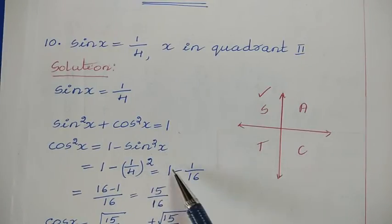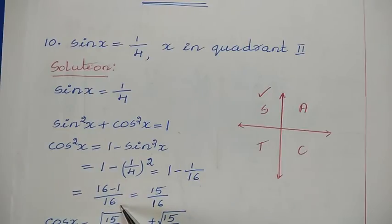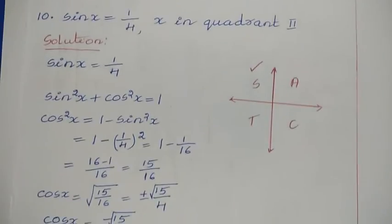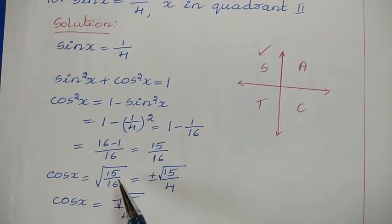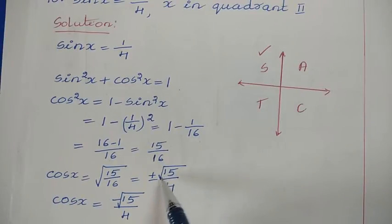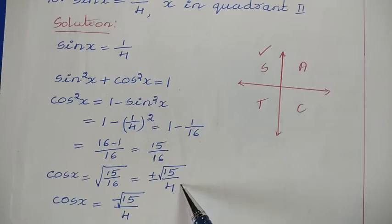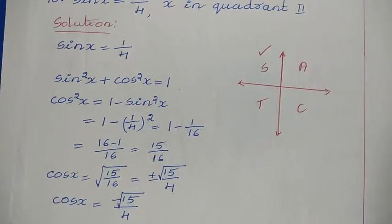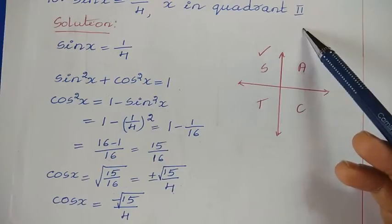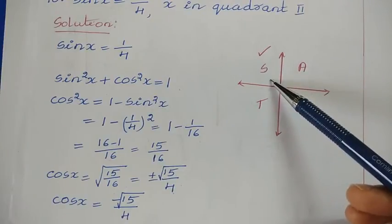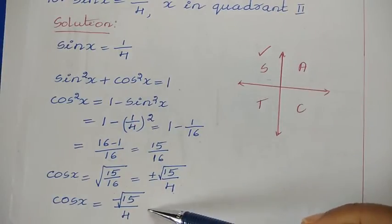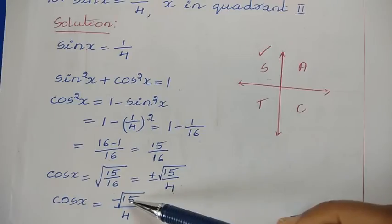Taking common denominator 16: cos²x = (16 − 1)/16 = 15/16, so cos x = ±√15/4. Since x is in the second quadrant, cosine is negative. So cos x = −√15/4.